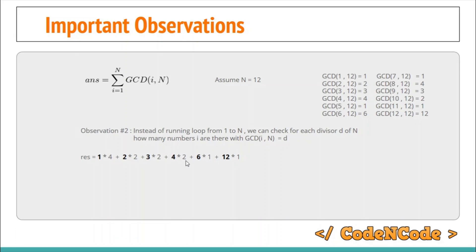To find the number of integers having GCD 4 with 12, simply find φ(12/4).